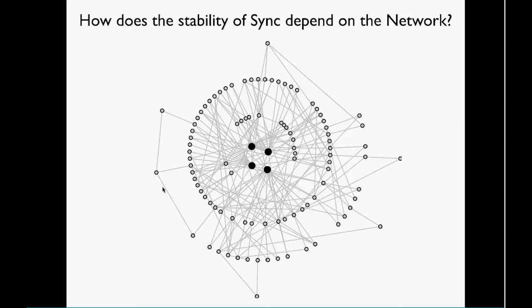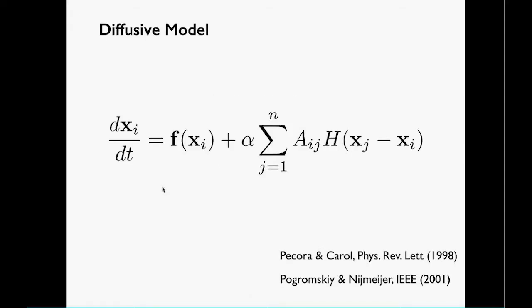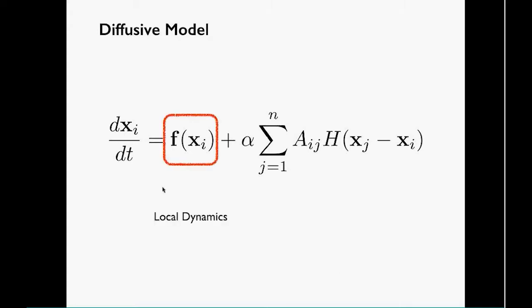I'll be focusing on a model that's called the diffusive model on a network, which was put forward by Lupecora and Carroll. Lots of people have done quite a bit of work on this. The model basically depends on three quantities: the local dynamics described by your favorite vector field, the coupling function—so here you see that's diffusive, which basically means that the strength of coupling depends on difference of states—and the graph structure.